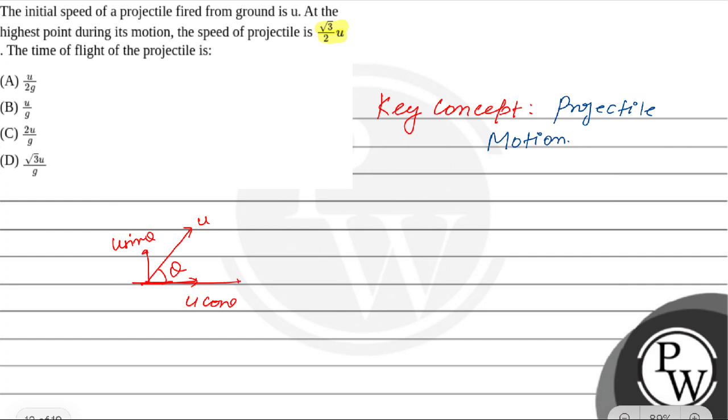We know at maximum height the vertical component becomes zero and only the horizontal component remains, that is u cos θ. The question tells us the horizontal component is √3/2 u, so we can write u cos θ = √3/2 u.